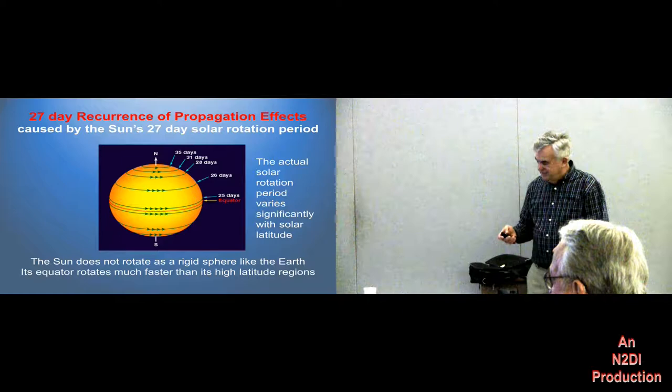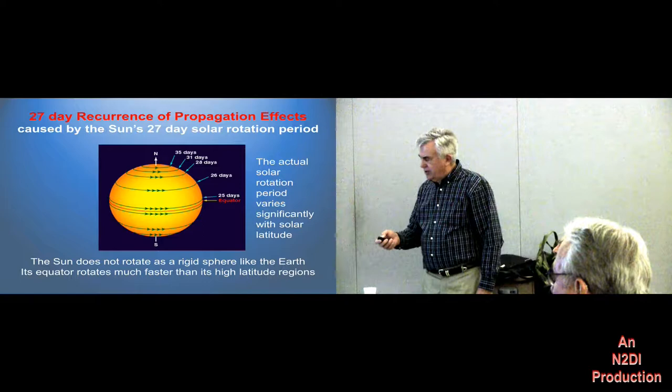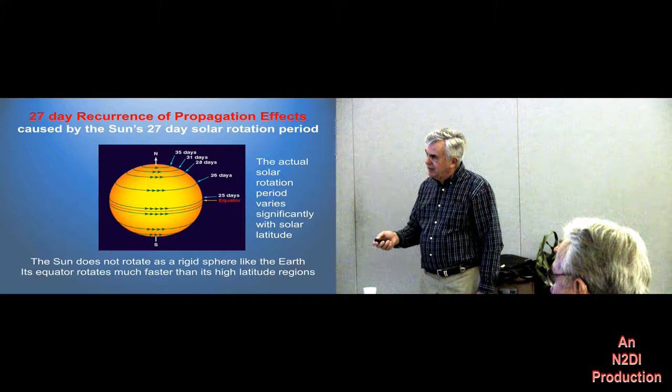But for most purposes, sunspots occur in this region here. So the rotation for the areas where sunspots are — where we really care — tends to be about 27 days, more or less.